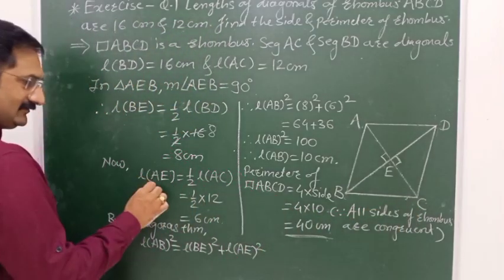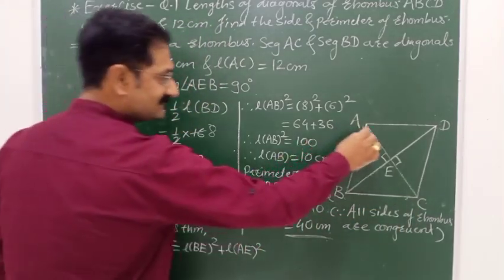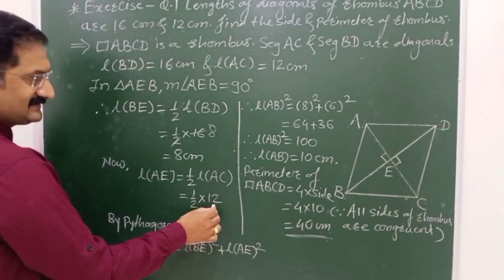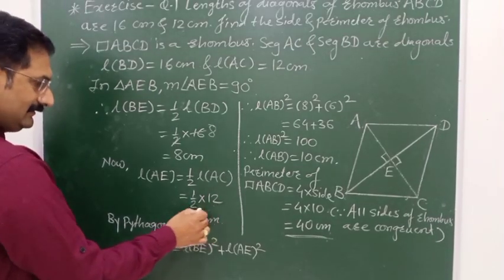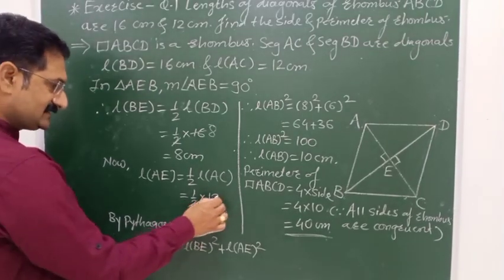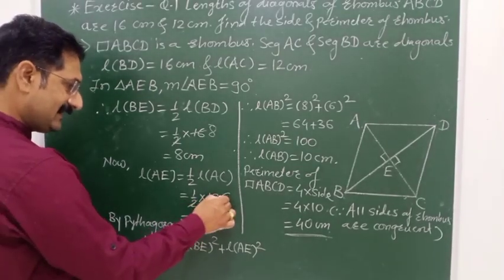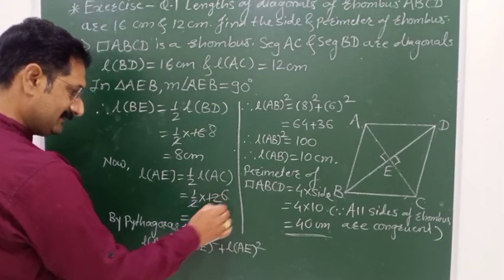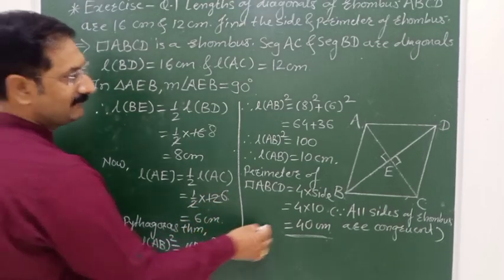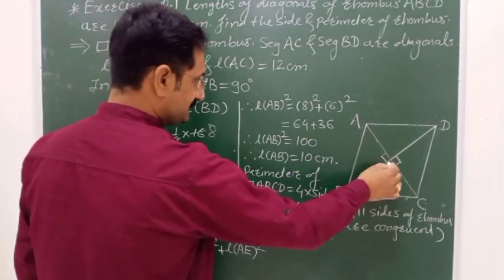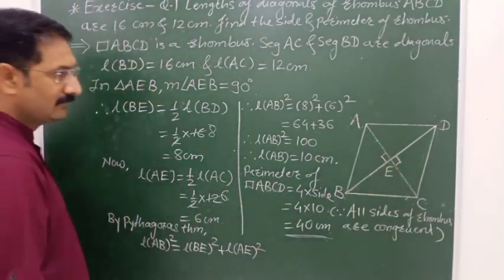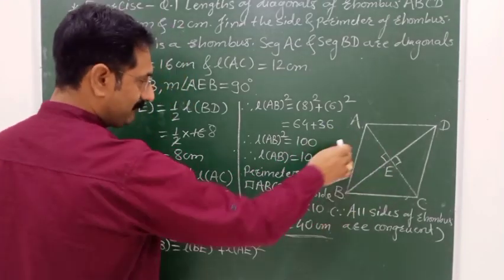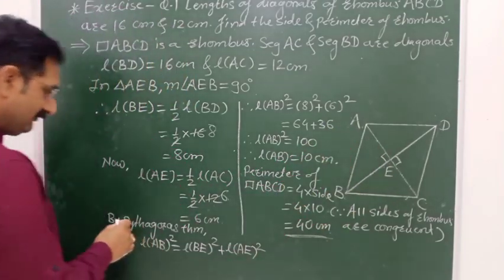The length of AE is equal to half of AC. AC length is 12 cm, so AE is 6 cm. Now in triangle AEB, we will apply the Pythagoras theorem.